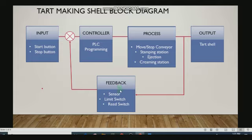The feedback is sensor. So sensor is used to determine when to start the process or when to stop the process. For example, the sensor is used to determine the stamping process when to start, and the limit switch is to determine if the process is complete.